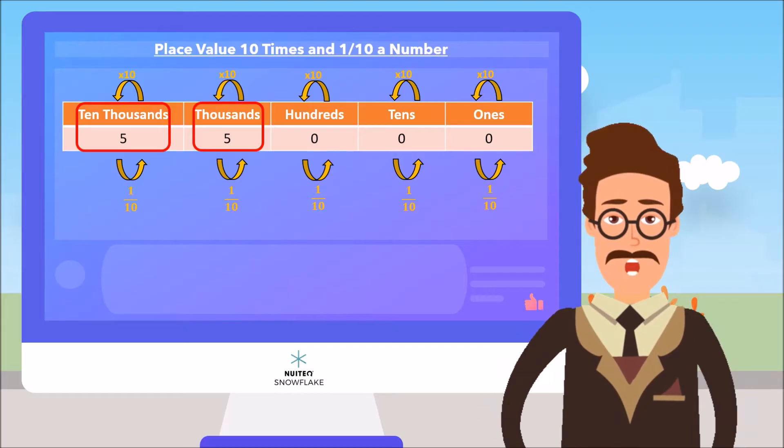because you have moved one place to the left. You could also say that the digit in the thousands place is 1 tenth the value of the digit in the 10 thousands place, because you have moved one place to the right.